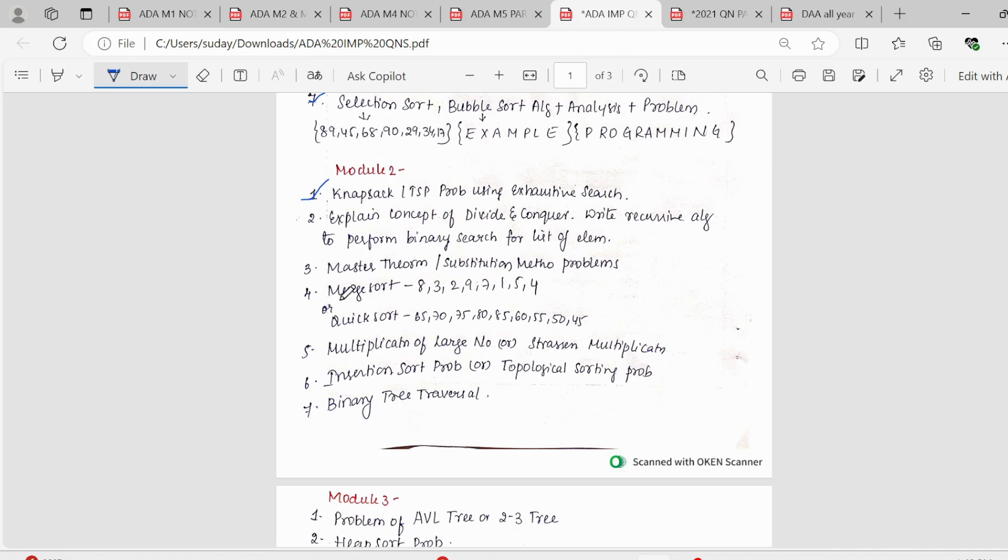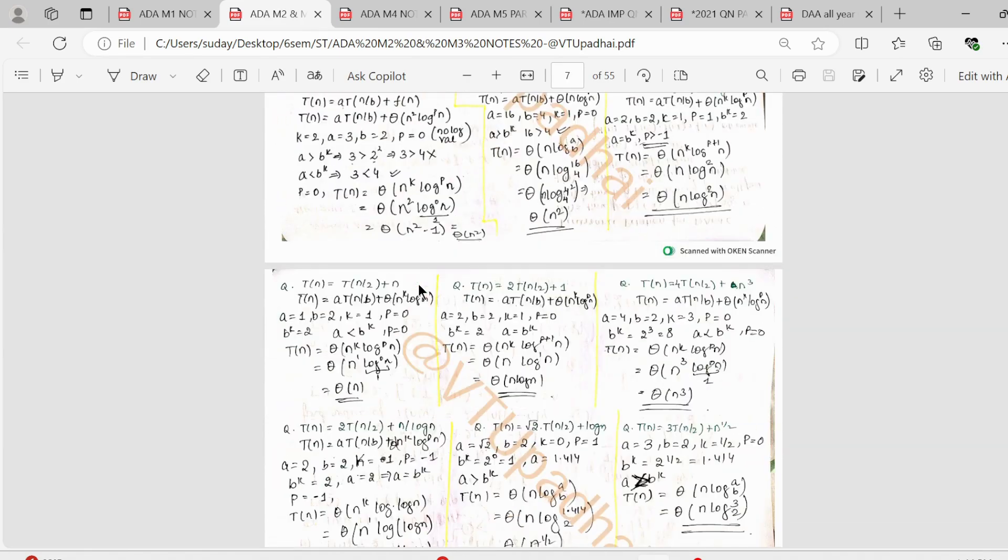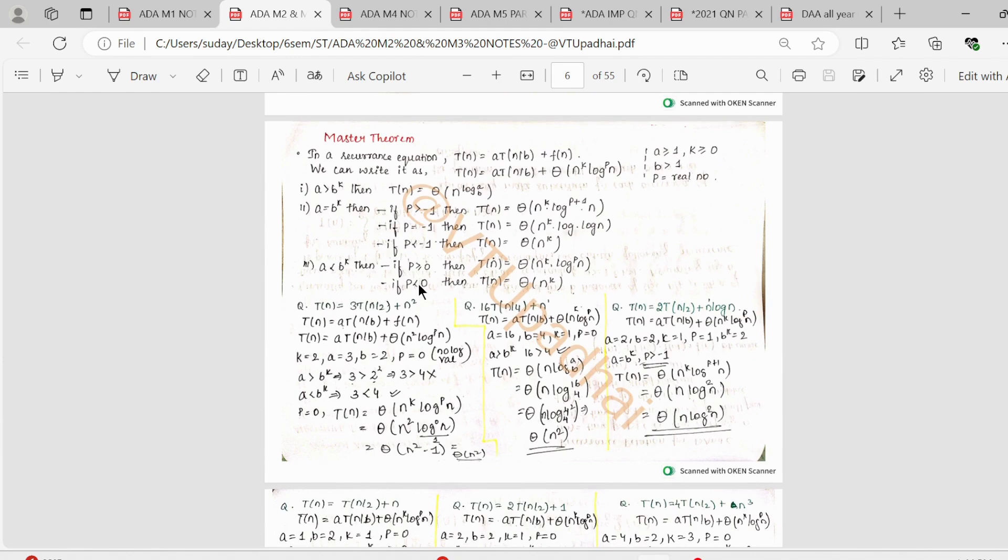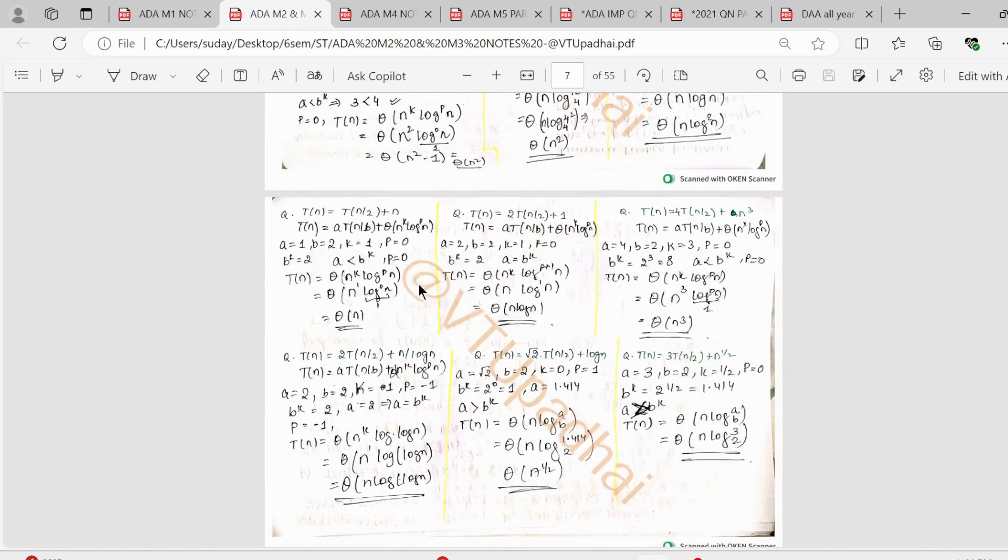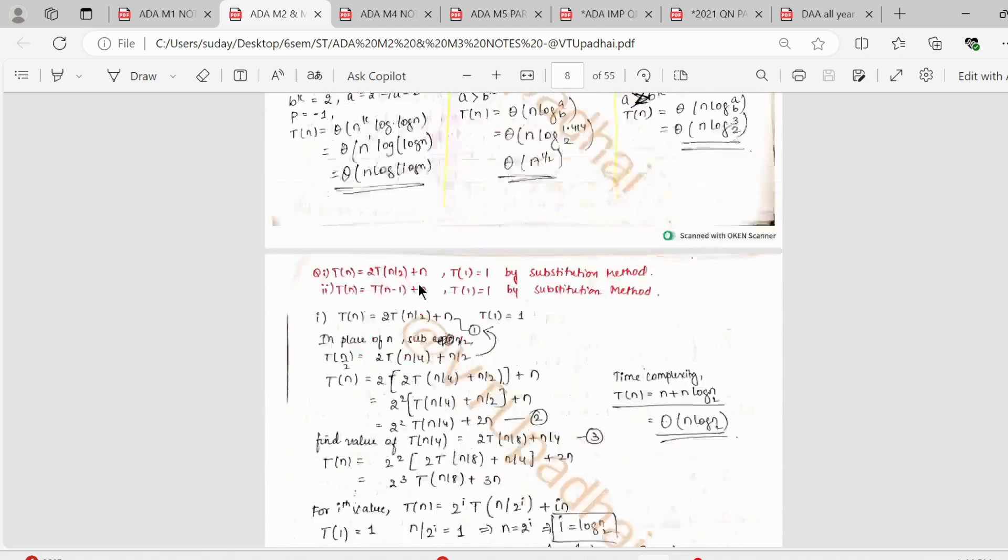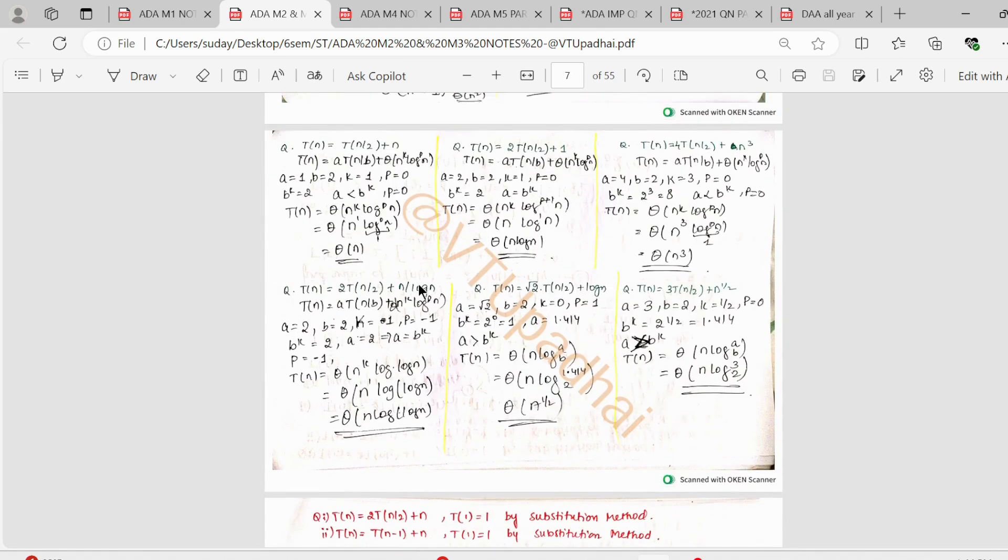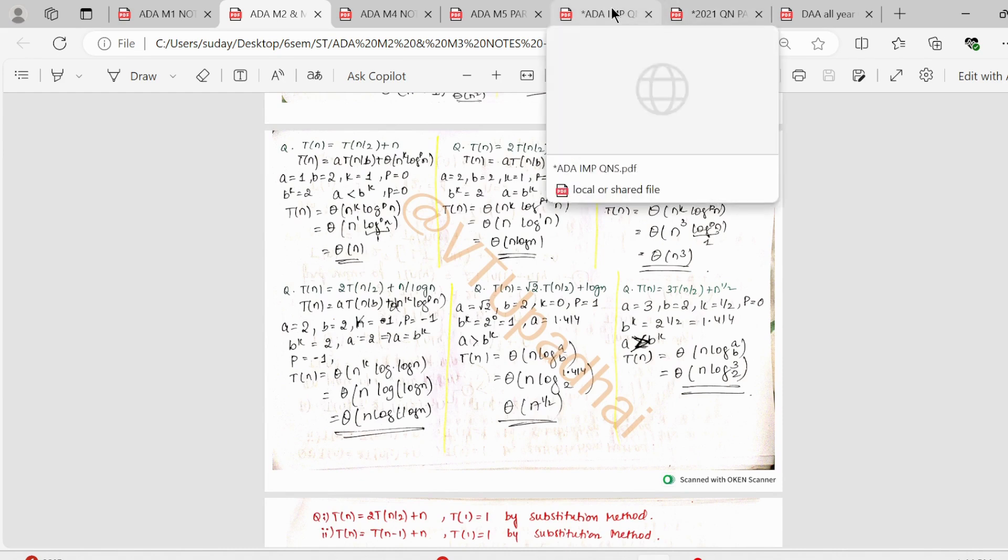So this was about the exhaustive search topic. Then we have concept of divide and conquer, write recursive algorithm to perform binary search for list of elements. Again, intro part of divide and conquer and then you have to write the algorithm for binary search. And if example is asked, we can write the example also. Next, we have the most important thing in second module that is the master theorem and substitution method problems. So master theorem substitution method problems are very important.